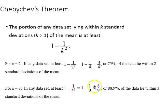If k is three, we can see that works out to about 88.9 percent. This is a very useful addition to the empirical rule, because it doesn't make the same assumption of normality.